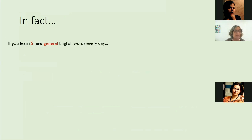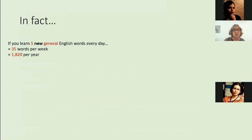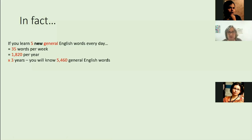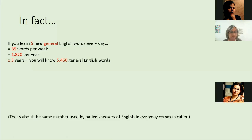Here's some information that might help you see how to achieve this. If you learn around five new general English words every day, that's 35 words a week, that's 1,820 a year. In three years, you will know over 5,000 general English words. You will be able to understand and take part in everyday English communication — whether that's speaking, reading, listening, or writing. That's about the same number used by native speakers of English in everyday communication.